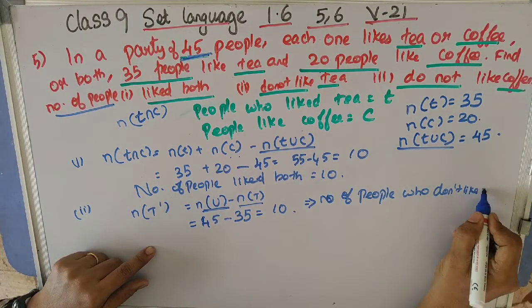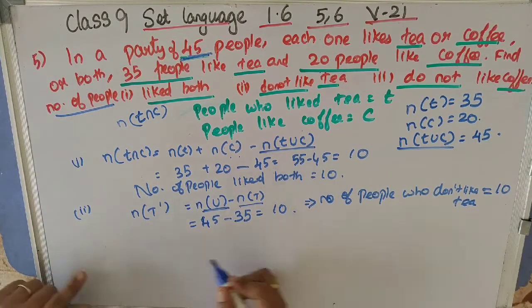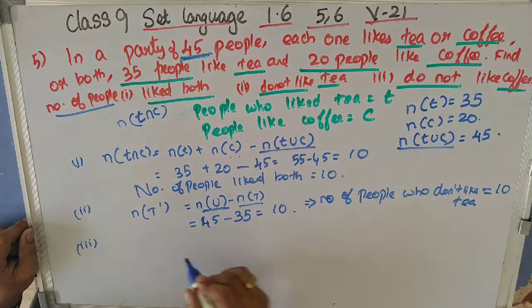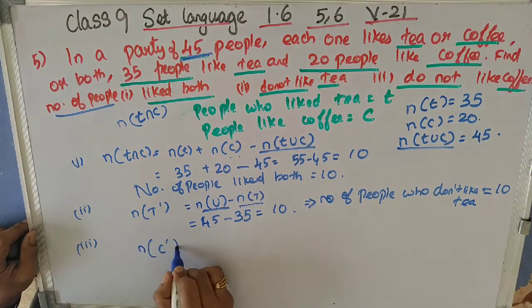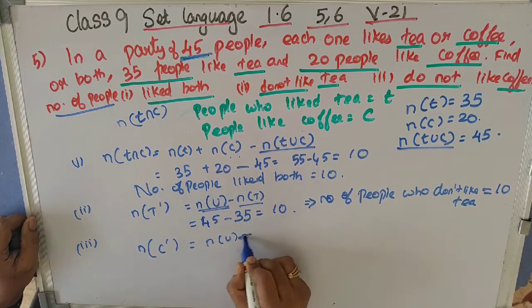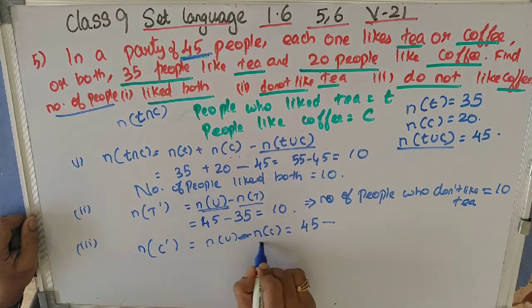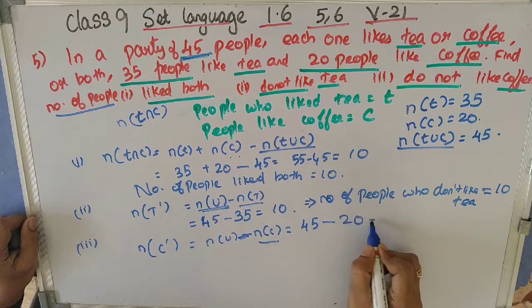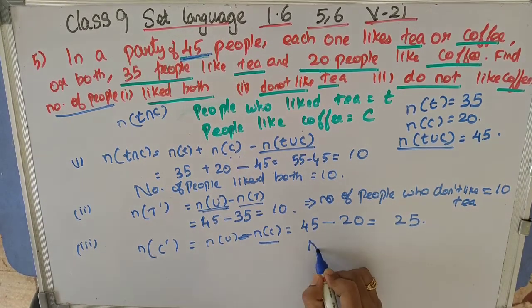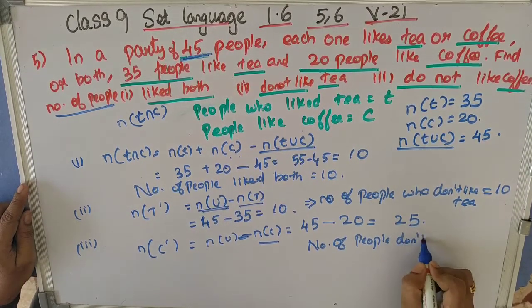Now we should find the number of people who do not like coffee. That is N of C dash, which equals N of U minus N of C. N of U is 45 minus N of C which is 20, so 45 minus 20 equals 25. Therefore, the number of people who do not like coffee is 25.